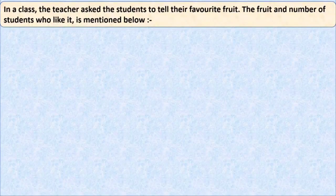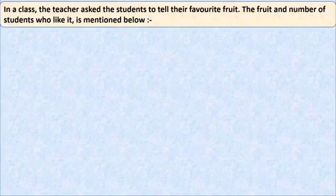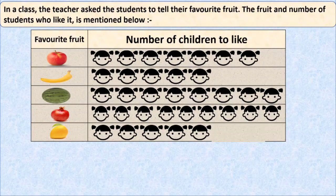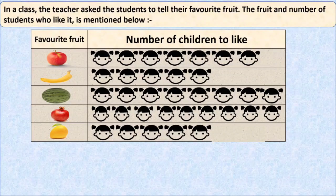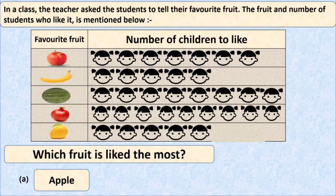In a class, the teacher asks the students to tell their favorite fruit. The fruit and the number of students who like it is mentioned in the table below. There are two columns: on the left side the name of the fruit is written, and on the right side the number of students who like that fruit is written. The question is: which fruit is liked the most?